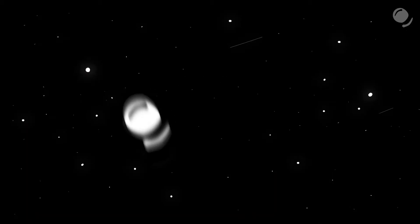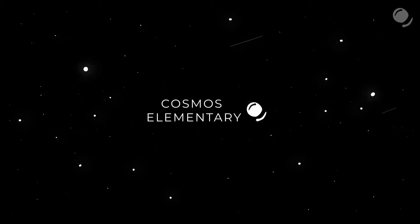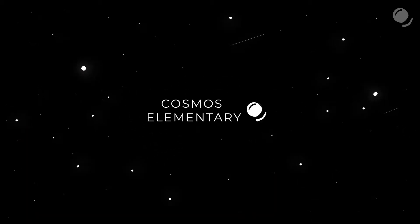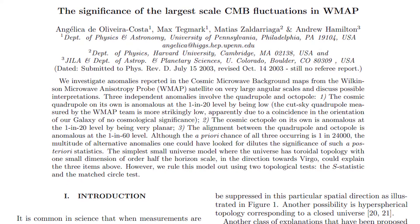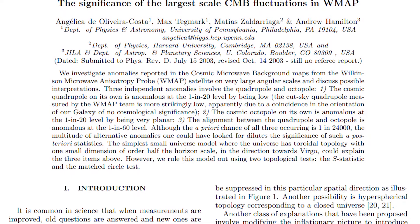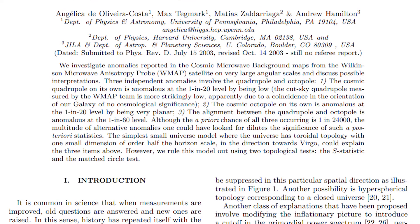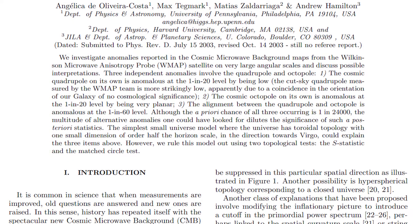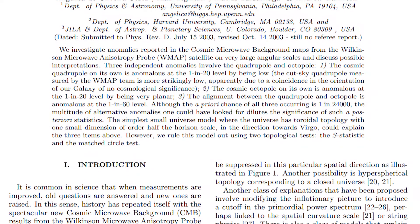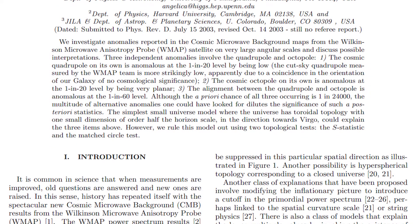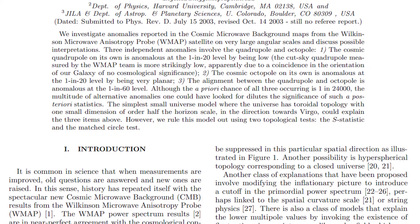It looks like our universe has a special direction, which contradicts the cosmological principle, and this Axis of Evil even hints at the special position of our solar system in the universe — against the Copernican principle, which states there is nothing special about our place. Were people thousands of years ago somewhat right after all? The Axis of Evil was first found in the data of the WMAP observatory.